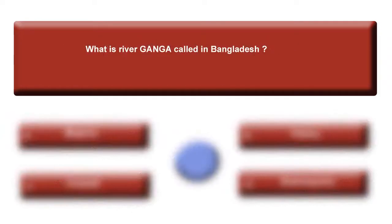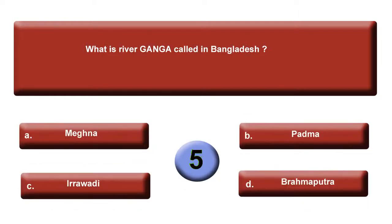Next question: What is river Ganga called in Bangladesh? This is quite an easy question — everyone I think knows this one. Your options are: option A, Meghna; option B, Padda; option C, Iravadi; or option D, Brahmaputra. Your right answer is B, Padda — River Padda.